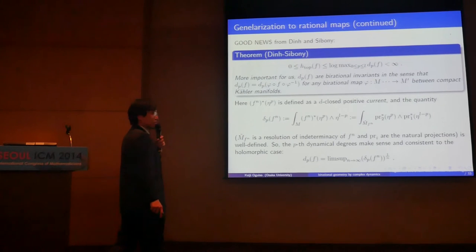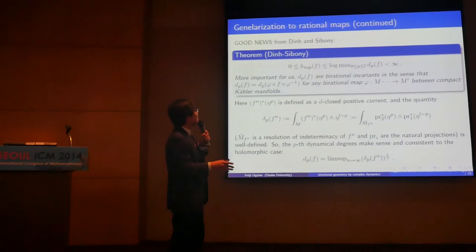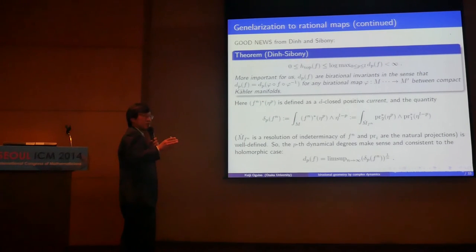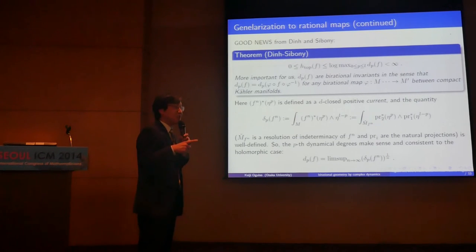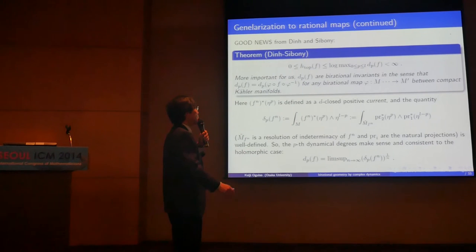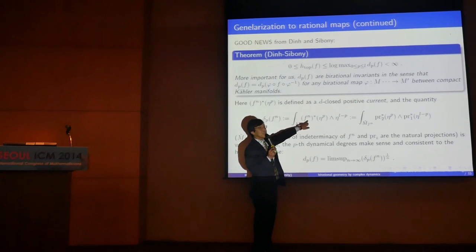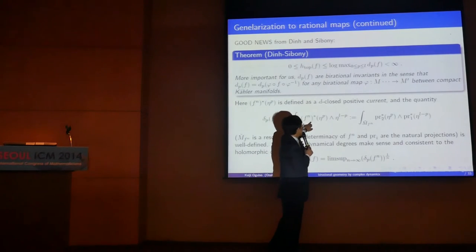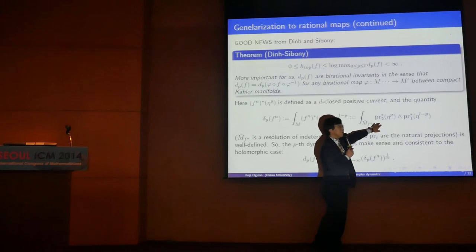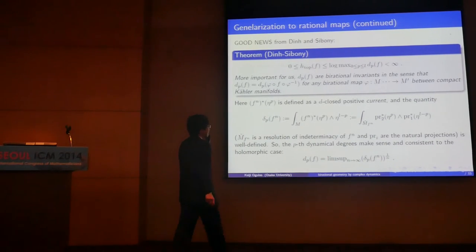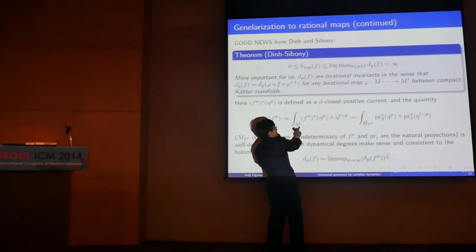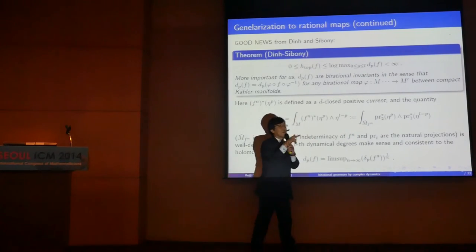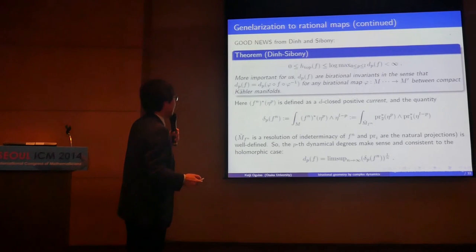There is one very good news, from Dinh-Sibony's work. Topological entropy is not a birational invariant, but somehow estimated from above. For us, the most important part is that the dynamical degree — which is an analytic number and hard to compute — is a birational invariant. The definition formally: first consider this number, but this part only needs care because it involves rational maps. We can interpret this part as a current. Then we can define the dynamical degree as in the holomorphic case. Here, the difference is that in the holomorphic case n is always n, but this changes according to n — making the problem delicate and involving analysis.